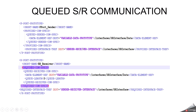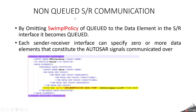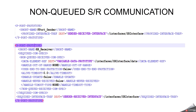In the sender receiver interface, whether it is queued or non-queued sender receiver communication is decided by using the software implementation policy. For non-queued sender receiver communication, the software implementation policy is simply omitted, and then automatically this will behave as non-queued. For non-queued, in the P-Port there is no queue length mentioned and no provided comspec. In the R-Port, we have a non-queued receiver comspec where we mention the VDP variable data prototype. No queue length is configured here, and based on your requirement you can configure the initial value.